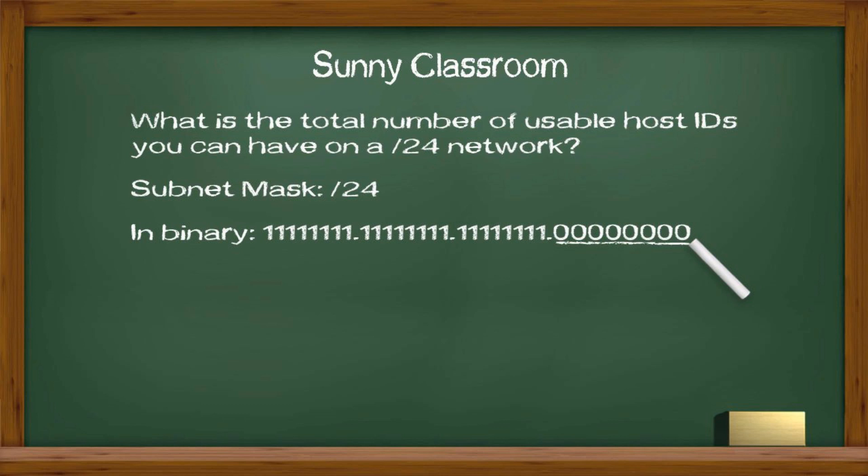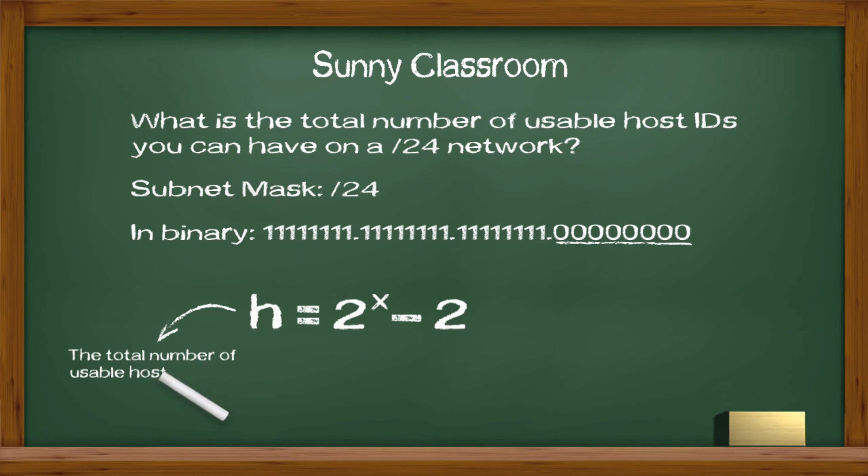To get the total number of usable host IDs, we use a simple formula: h equals 2 to the x minus 2. Where h stands for the total number of usable host IDs, and x stands for the number of zeros of a given subnet mask.